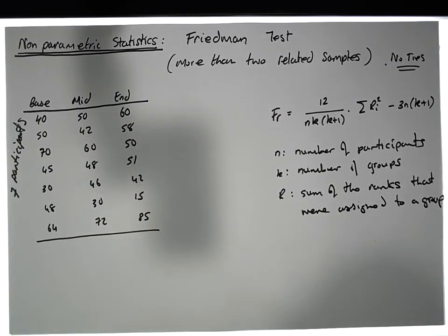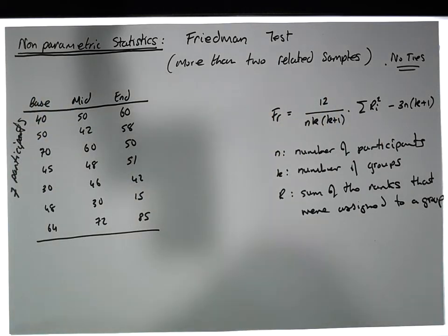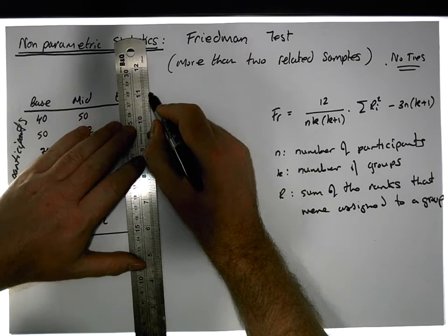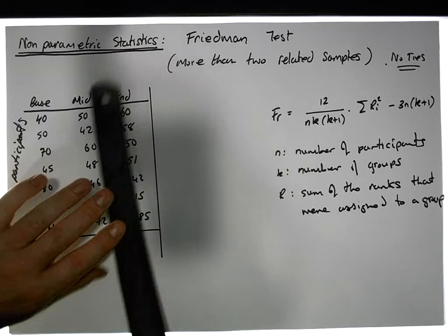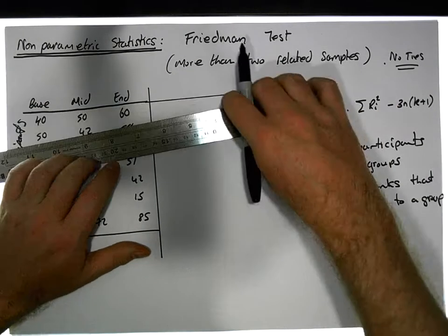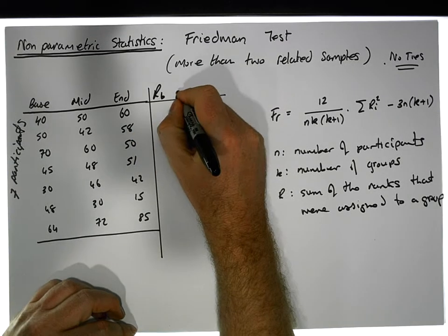We're going to have one of these statistics which is going to be an overall measure. So what we need to do is take our data set and rank it. We're going to rank across the participant scores—the rank at baseline, the rank at midpoint.